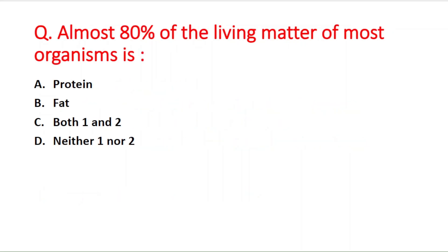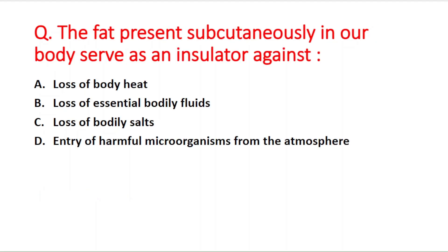Next question: almost 80 percent of the living matter of most organisms is — option A protein, B fat, C both, D neither. The right answer is option A — protein. Next question: the fat present subcutaneously in our body serves as an insulator against — option A loss of body heat, B loss of essential bodily fluids, C loss of bodily sources, D entry of harmful microorganisms. The right answer is option A — loss of body heat.